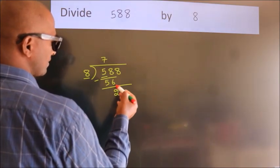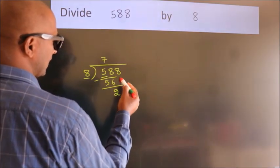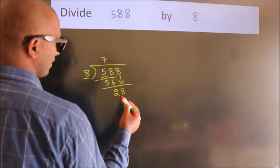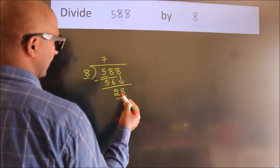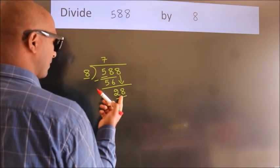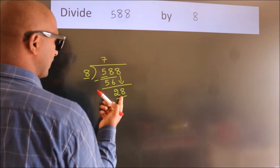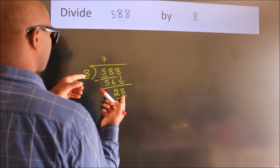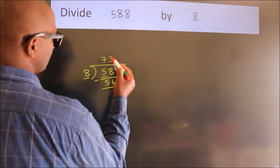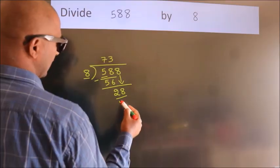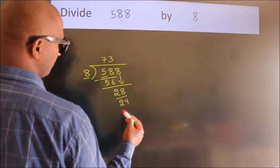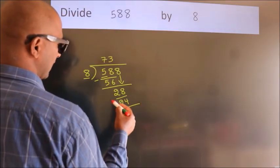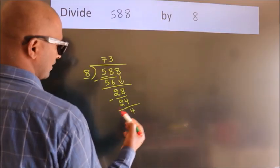After this, bring down the beside number. So, bring down 8. Now we have 28. A number close to 28 in the 8 times table is 8 threes 24. Now we subtract. We get 4.